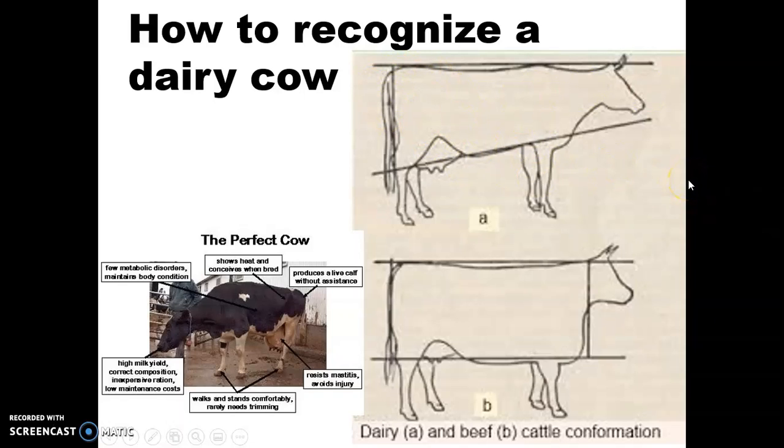They're resistant to infections like mastitis that can contaminate the milk and eventually really hurt the cow as well. They're built so that they're not as likely to get injured and able to walk and stand comfortably with rare needs for hoof trims or anything like that. And of course, for high milk yields, we want them to have the correct composition in their milk of the amount of butter fat and things like that that we want. We want them to be inexpensive to feed and have low maintenance costs. So those are all of the things that have gone into breeding these dairy cows. And you're going to see some of those come up as we talk about your breeds, some of those characteristics that they originally tried to make that breed fit the best.